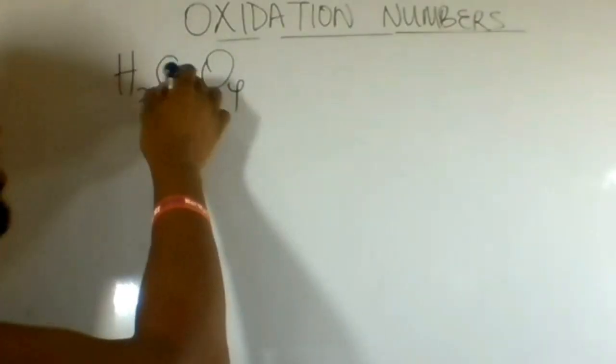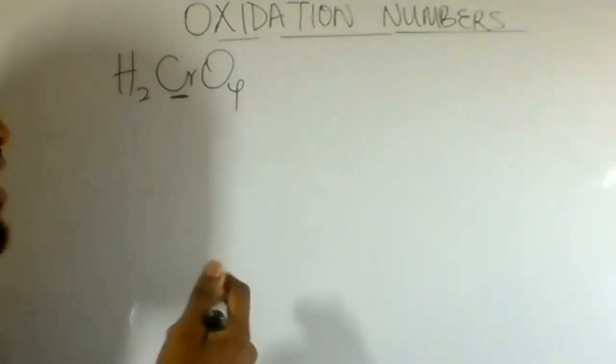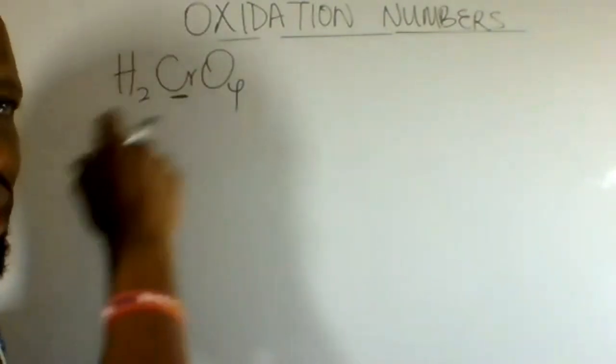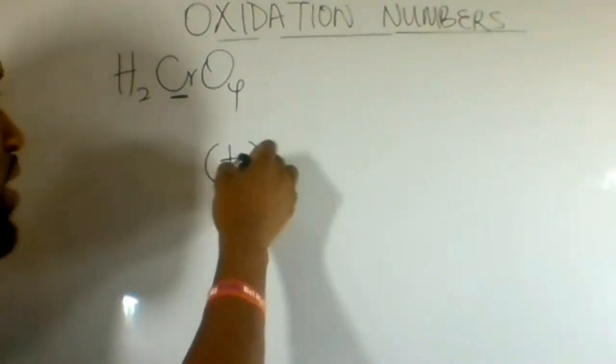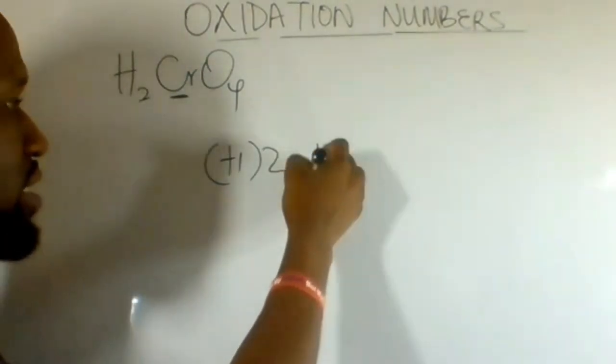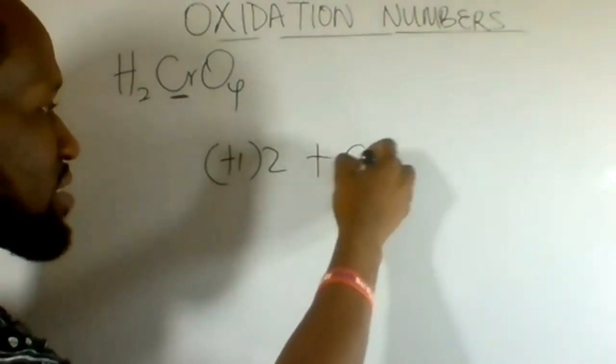For the oxidation number of chromium in chromic acid, add the individual oxidation numbers equal to 0. If hydrogen is plus 1 multiplied by 2, we have 2H in that case. Chromium, let's give it as chromium.